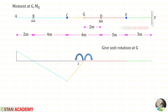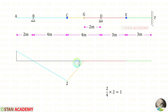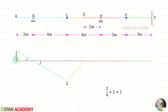Now let us draw the ILD for the moment at G. We need to give unit rotation. On the right side we cannot rotate because if we rotate GDE, EF must also rotate, which is not possible. So for GDE and EF there is no change. The segment GC will rotate by unity; the hinge in point C will go downwards and segment ABC will follow. The angle is unity, so if this distance is that value, this height is also equal to that value. Using the same-angle concept we can find this height. This is the ILD for the moment at G.